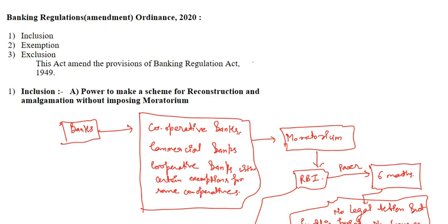Hello everyone, I hope you're doing well. Today we're going to have a discussion on Banking Regulation Amendment Ordinance 2020 that has been recently passed by the cabinet at the center. This particular amendment includes three sections: first is inclusion, second is exemption, and third is exclusion. This ordinance amends the provisions of Banking Regulation Act which was passed in 1949.